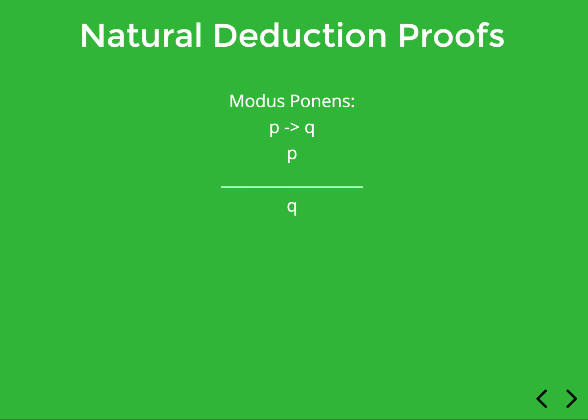Next we have modus ponens, which applies to conditional statements. With a conditional, if the antecedent — the first part — is true, then the consequent — the second part — is true. So if you have a conditional in your proof and you also have the antecedent asserted independently, then you can immediately infer the consequent. So if we have P implies Q and we also have P, we get to infer Q. A helpful visual metaphor: think of a conditional like P arrow Q as a train that takes you from P to Q — if you buy a ticket at P, you end up at Q.